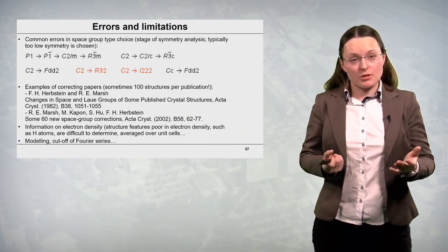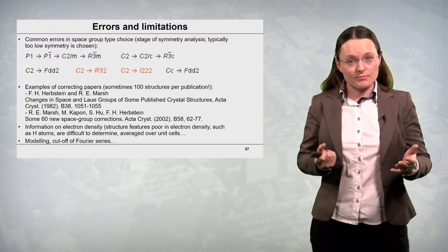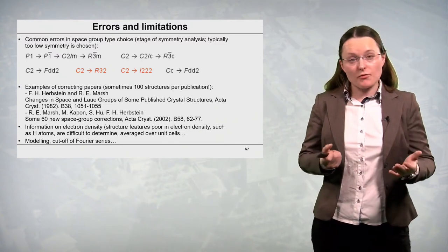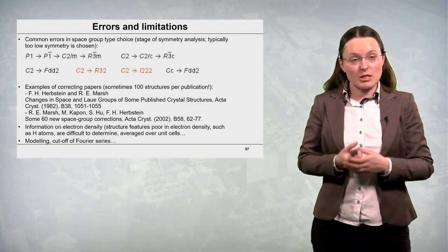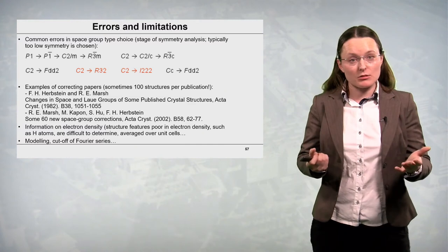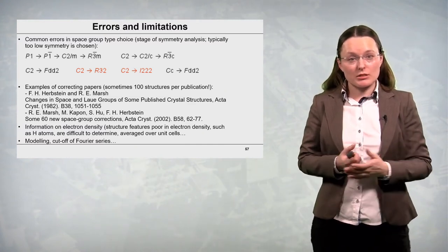So what we get from this method is the information on electron density. So if there are structure features poor in electron density. For instance hydrogen atoms. Hydrogen atom contains only one electron. Then it's difficult to determine them.